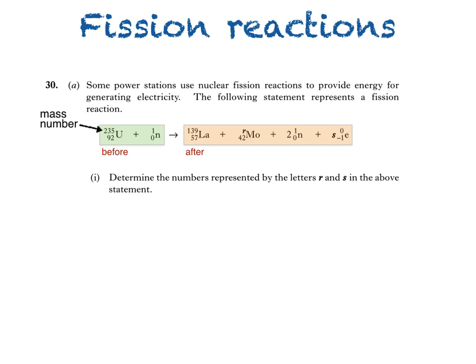This is the mass number of the uranium nucleus, 235. This tells us the number of protons plus neutrons in the nucleus. Before the reaction, then, the total of the mass numbers is 235 plus 1.